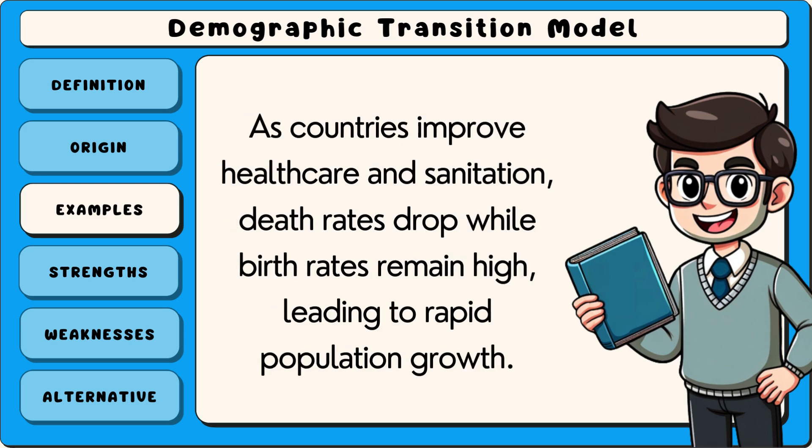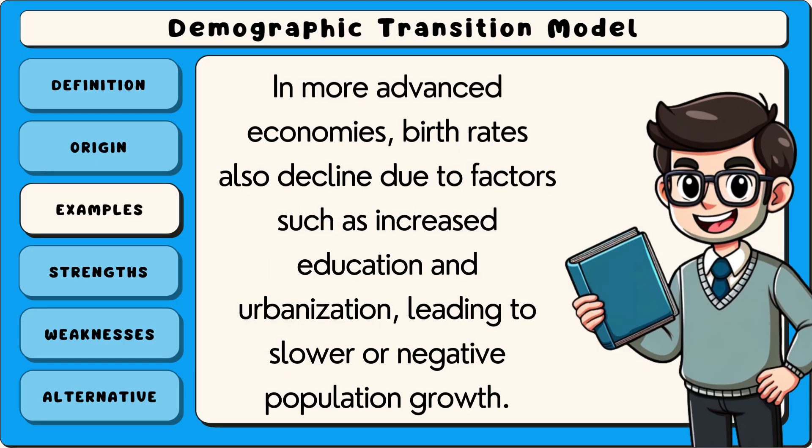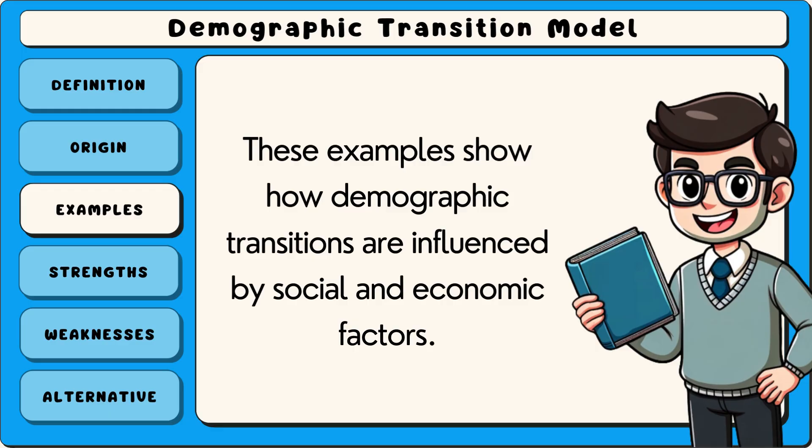As countries improve healthcare and sanitation, death rates drop while birth rates remain high, leading to rapid population growth. In more advanced economies, birth rates also decline due to factors such as increased education and urbanisation, leading to slower or negative population growth. These examples show how demographic transitions are influenced by social and economic factors.